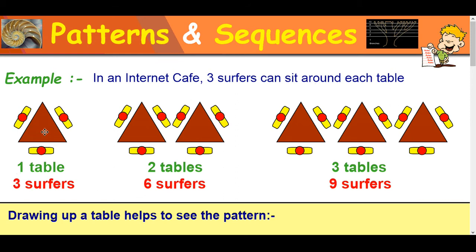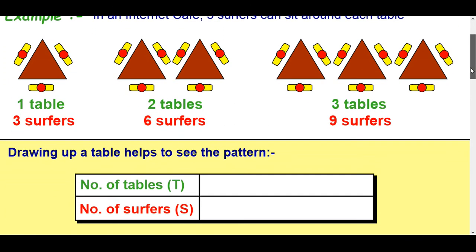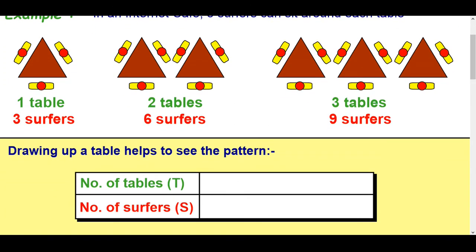So we've got a table here, triangular table, this is meant to be the top view of the shoulders and the red, I guess they've got red hair or something. And then you've got two tables and then you've got six people, three tables and nine people. So drawing up a table helps to kind of see what the pattern is. You can probably see it already. We are going to go into more complex ones later on in a different video but these are simple ones to start.